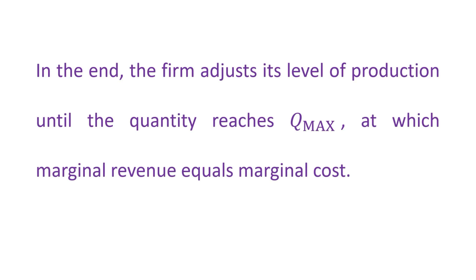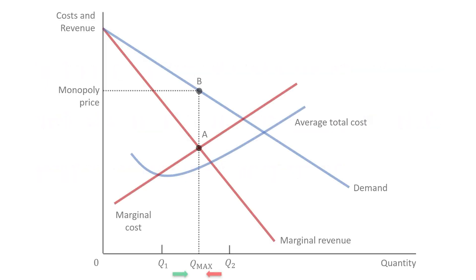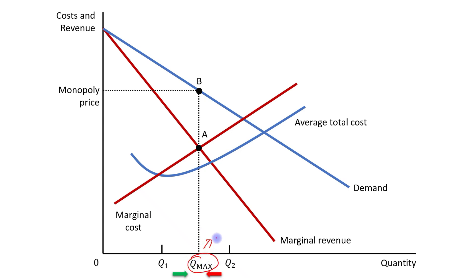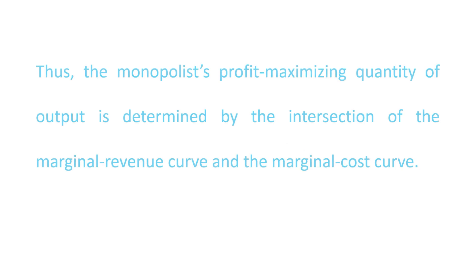In the end, the firm adjusts its level of production until the quantity reaches Q_max, at which marginal revenue equals marginal cost. We can easily see this at the intersection point of the MR and MC curves, Point A. Thus, the monopolist's profit maximizing quantity of output is determined by the intersection of the marginal revenue curve and the marginal cost curve.